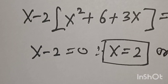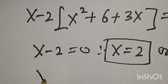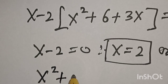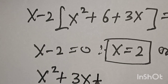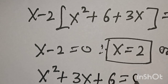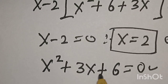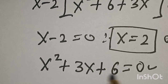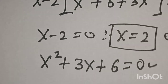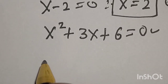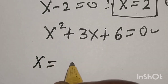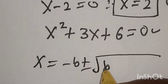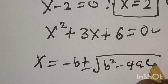Or, case two: s² + 3s + 6 = 0. This is a quadratic equation which can be solved using the quadratic formula: s equals negative b plus or minus square root of b² - 4ac, divided by 2a.